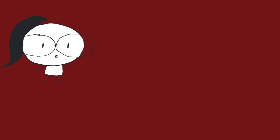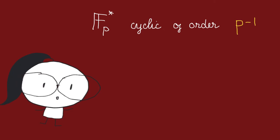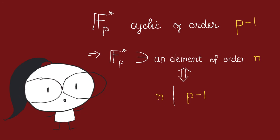So when does fp star contain an element of order n? Well, remember fp star is cyclic of order p minus 1. So by property of cyclic group, we know that it contains an element of order n if and only if n divides p minus 1.